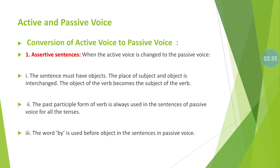Now let's see how to transfer voice from active to passive and passive to active. There are four types of sentences: assertive, interrogative, imperative, and exclamatory. We will see one by one how to change the voice in each. There are also some rules for transferring a sentence from active to passive and passive to active — let's look at the assertive sentence, or statement, which uses subject-verb-object pattern.